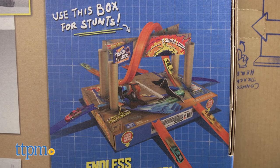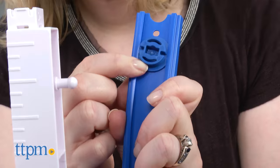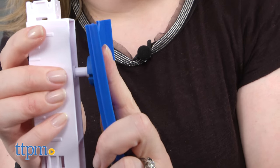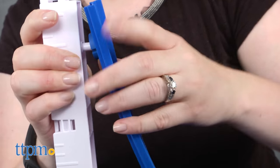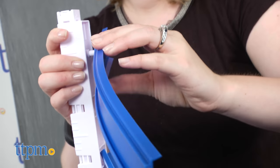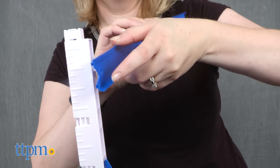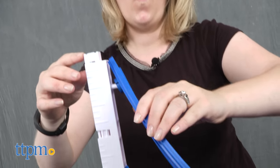You can even incorporate the box into the challenges and use it for stunts. New pivot points allow you to connect and rotate the track pieces 360 degrees, which is perfect for when you want to use common household items such as cups or tissue boxes to create even more stunts.